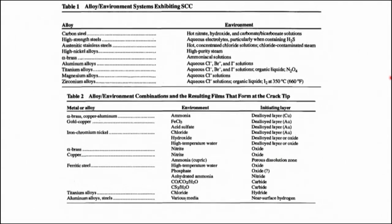In many alloy-environment combinations it is not yet understood when stress corrosion cracking will start. The established combinations include: carbon steel in hot nitrate, hydroxide, and carbonate solutions; high strength steel in aqueous electrolytes containing sulfur dioxide and hydrogen sulfate; austenitic stainless steel in sodium chloride environments; high nickel alloys in high purity steam; and alpha brass in ammonia solutions.